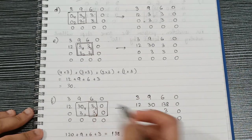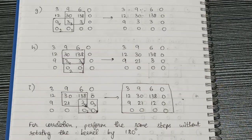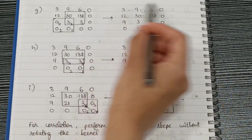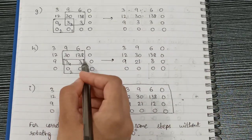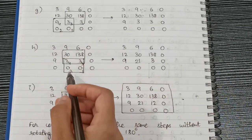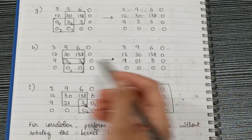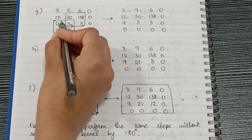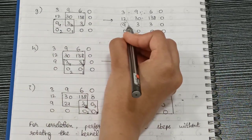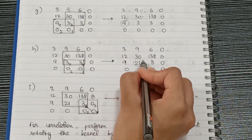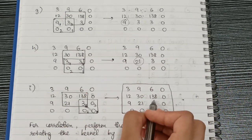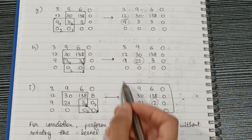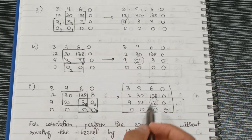We continue placing the kernel over successive positions of the zero-padded image, multiplying and accumulating values, and writing results to the corresponding output positions. The kernel is shifted by one position each time. Once the kernel can no longer be shifted further, we obtain our final output image. This is our final convolution result.